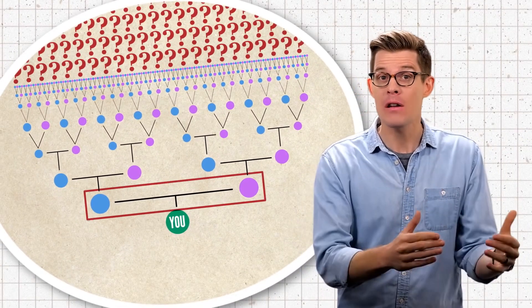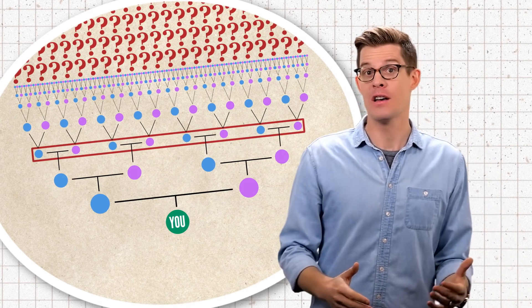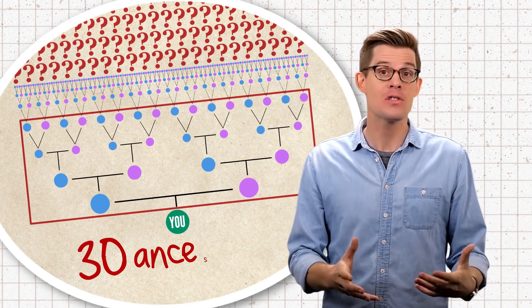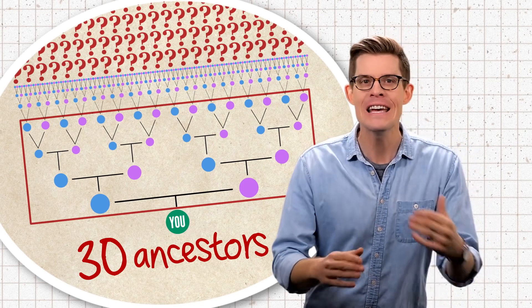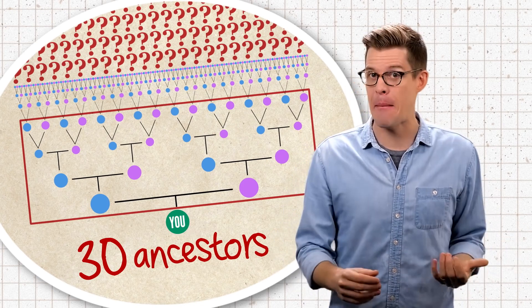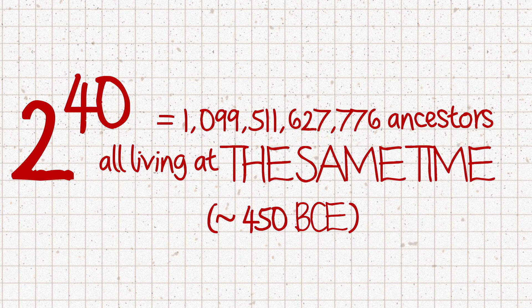Well, you have two parents, four grandparents, and eight great-grandparents. Four generations back, your direct ancestors total 30. If we continue down this line, doubling every step, just 40 generations ago we'd find a trillion ancestors all living at the same time.